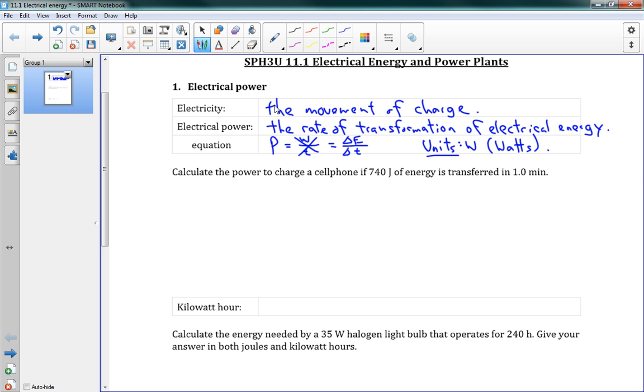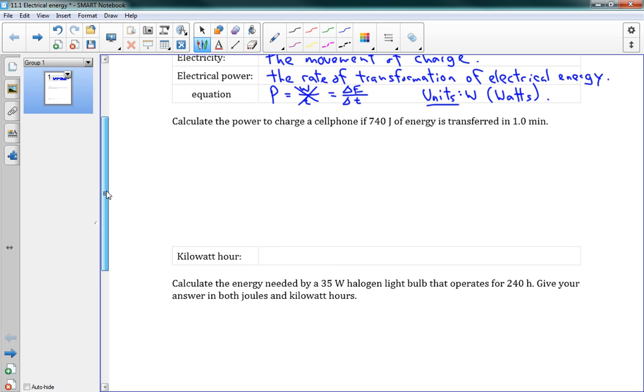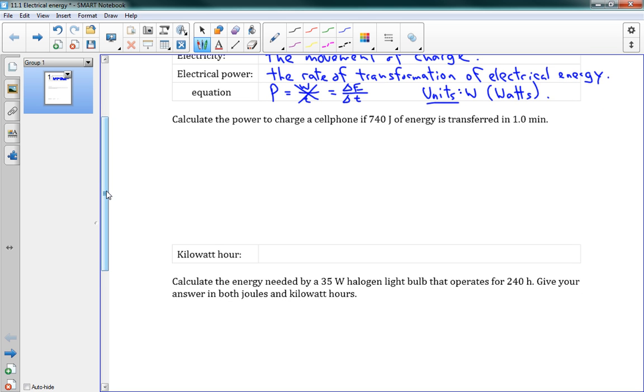We've seen power before - it's just how quickly we convert energy. The first problem says, calculate the power to charge a cell phone if 740 joules of energy is transferred in one minute. First, we need to convert delta T to one minute, which is 60 seconds. We always need to work with our standard units. So, power is delta E over delta T. We converted 740 joules - that's how much energy has changed from one form to another. So, delta E is 740, delta T is 60 seconds, and this gives us 12 watts.